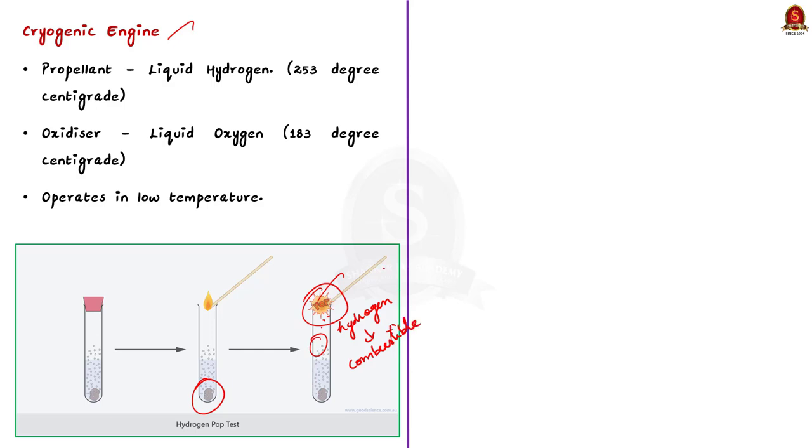The cryogenic engine uses liquid hydrogen as propellant and liquid oxygen as oxidizer. Oxygen liquefies at 183 degree centigrade, while hydrogen exists in liquid form below 253 degree centigrade.